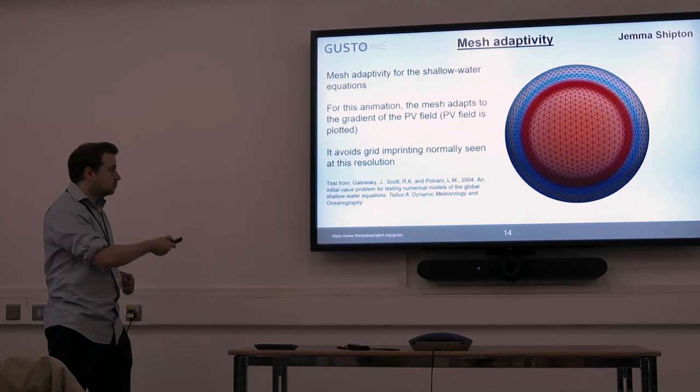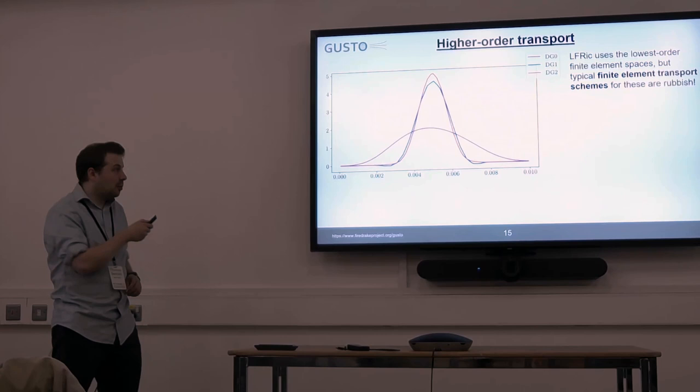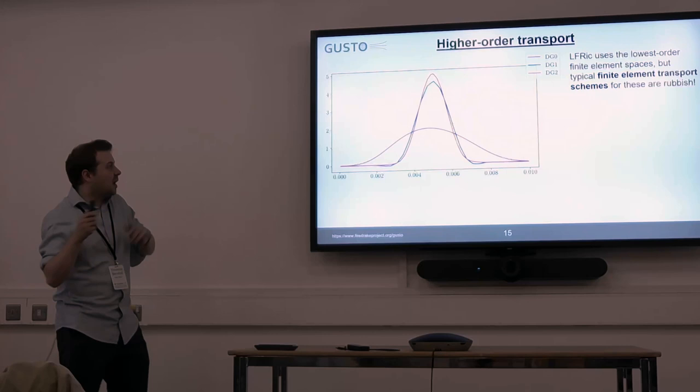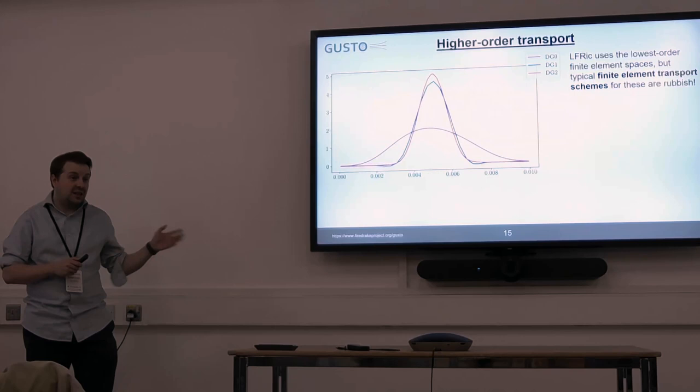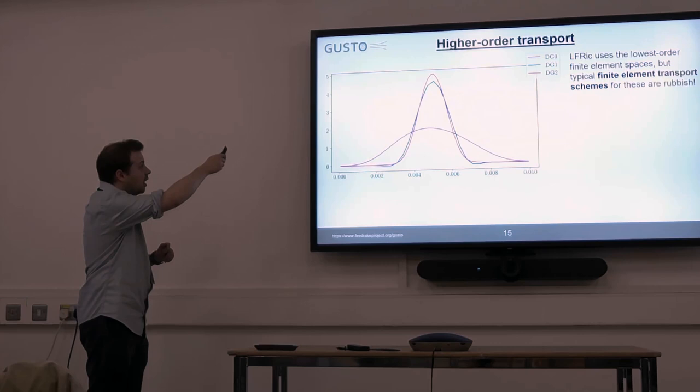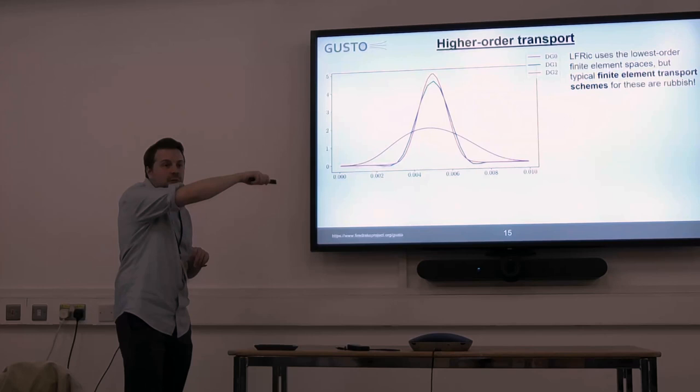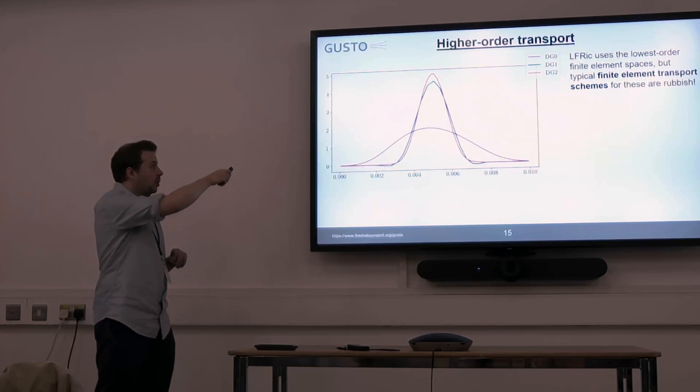This slide is about transport schemes. I need Gusto to be able to do the lowest order set of spaces so I can compare it with Elfrick. Transport schemes for the lowest order spaces are very bad — finite element transport schemes for the lowest order spaces are very bad. These three different lines are a Gaussian hill being transported once around a periodic interval, all with the same number of degrees of freedom but in different spaces. DG0 with the standard upwind scheme is not even first order — it's really diffusive. You'd start with something that looks like the red line and it just slumps out.